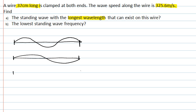But we're asked to find the wave with the longest wavelength. So the longest possible wavelength would be if you have a node at either end, where the wire is fixed, and in the middle, an anti-node, where you have maximum displacement.